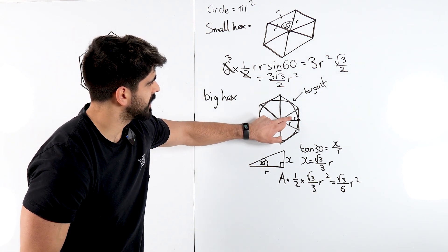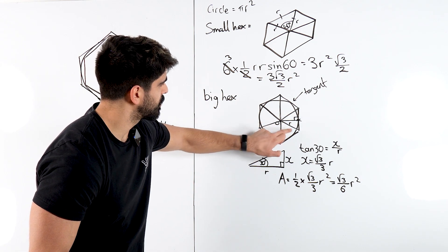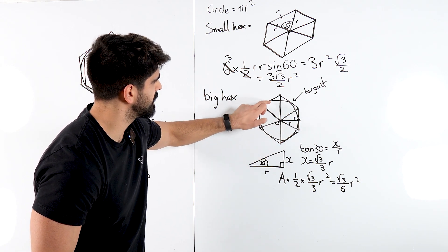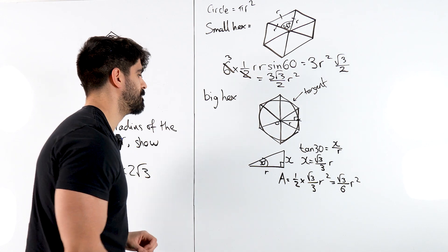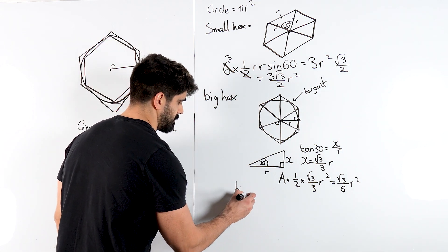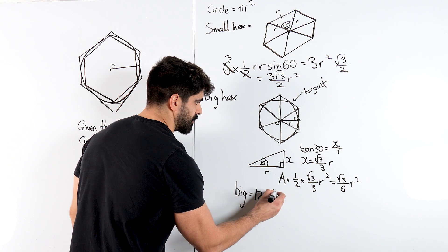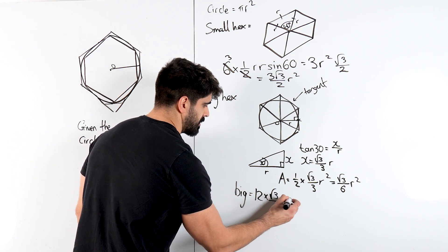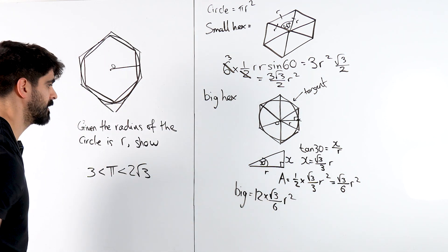Remember this is only this. That's only one tiny part. There's one, two, three, four, five, six, seven, eight, nine, ten, eleven, twelve of them. So the big hex is 12 times root 3 over 6 r squared.